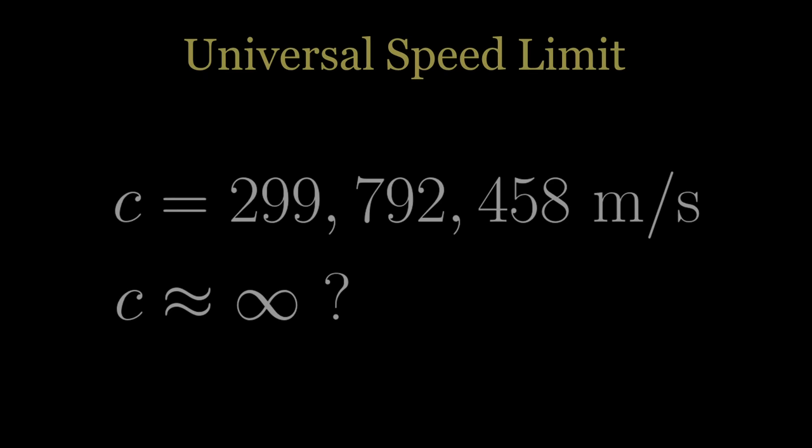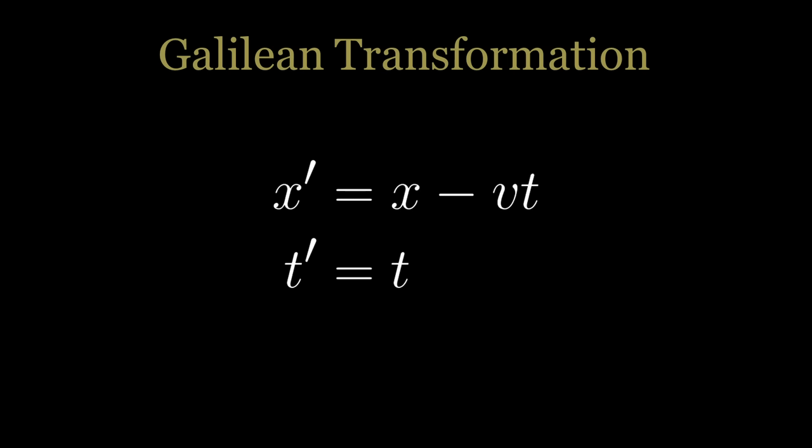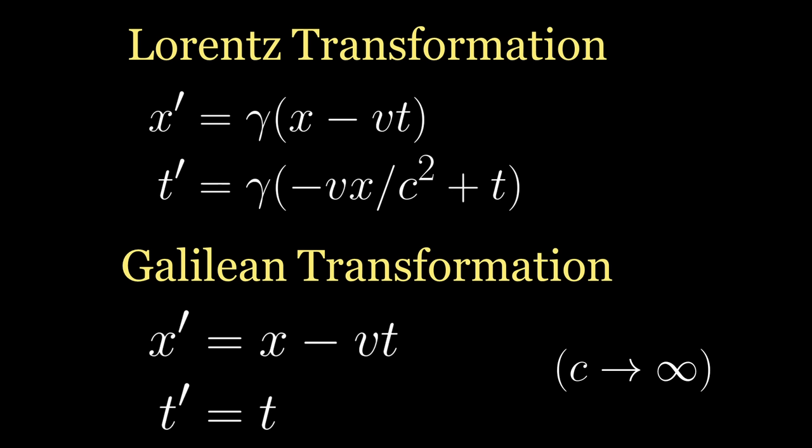Letting c approach infinity thus leads us to the following transformation. These equations are known as the Galilean transformation, and they finally represent the simple, intuitive answer that we were originally expecting to find when we first began this exercise.